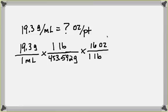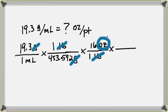Since we don't want pounds, we put pounds on the bottom and ounces on top. And what that allows us to do is cancel out all the grams and all the pounds, leaving us with ounces on top. And in our answer, the unit we want is ounces on top.